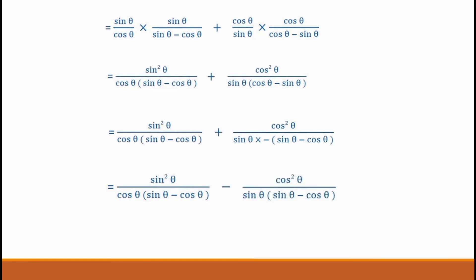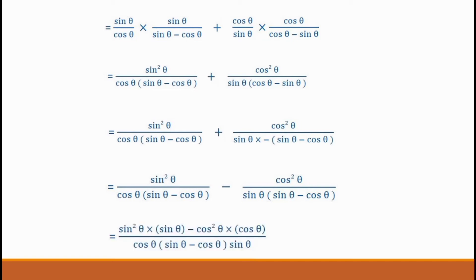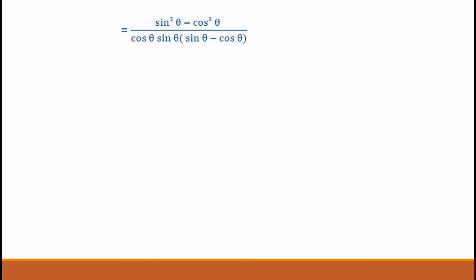So we get minus cos squared θ · sin θ · (sin θ minus cos θ). The combined denominator will be cos θ · sin θ. We see cos θ into cos θ, divided by cos θ · sin θ · (sin θ minus cos θ). This gives sin squared θ · sin θ, which is sin cubed θ, minus cos θ · cos θ, which is cos cubed θ. Now we can rewrite it as (sin³θ minus cos³θ) divided by (cos θ · sin θ · (sin θ minus cos θ)).